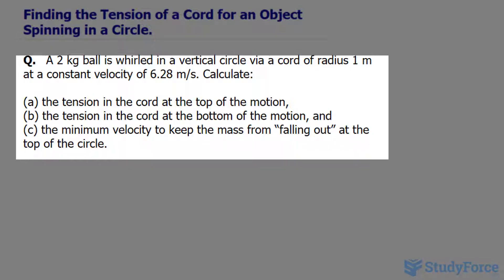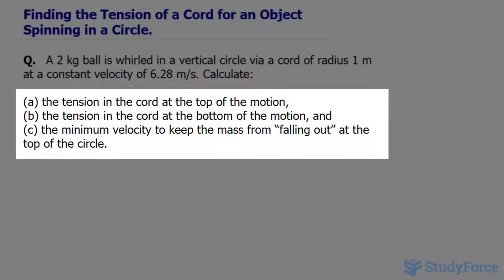We have to calculate three things. The first thing being the tension in the cord at the top of the motion, the tension at the bottom, and finally the minimum velocity to keep the mass from falling out at the top of the circle.